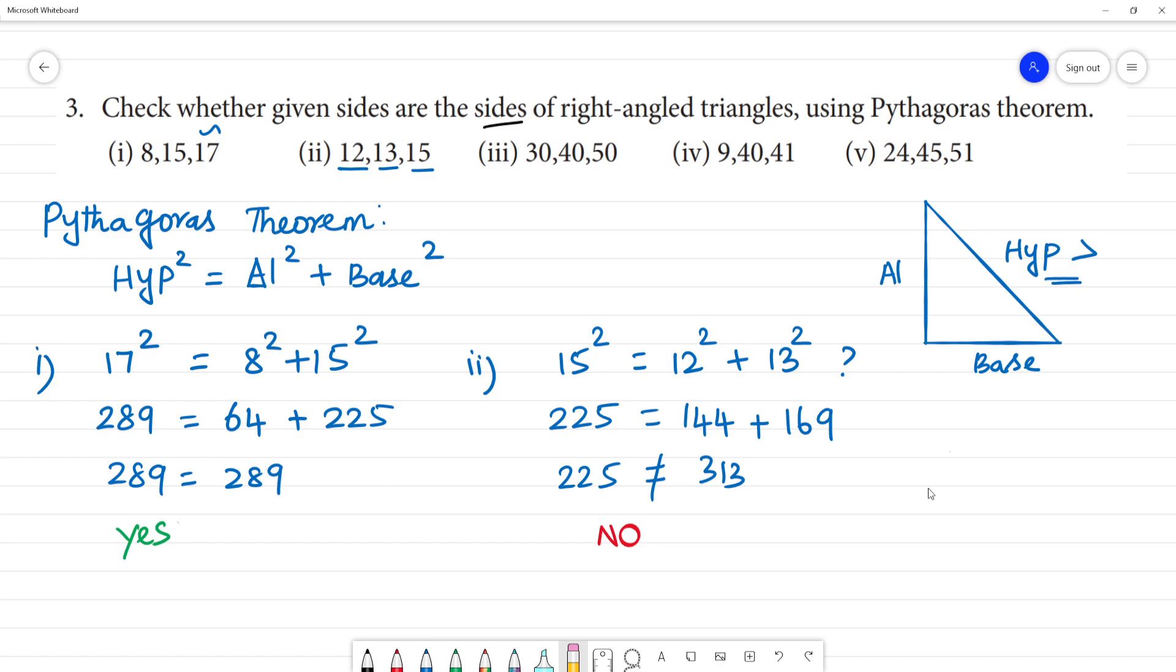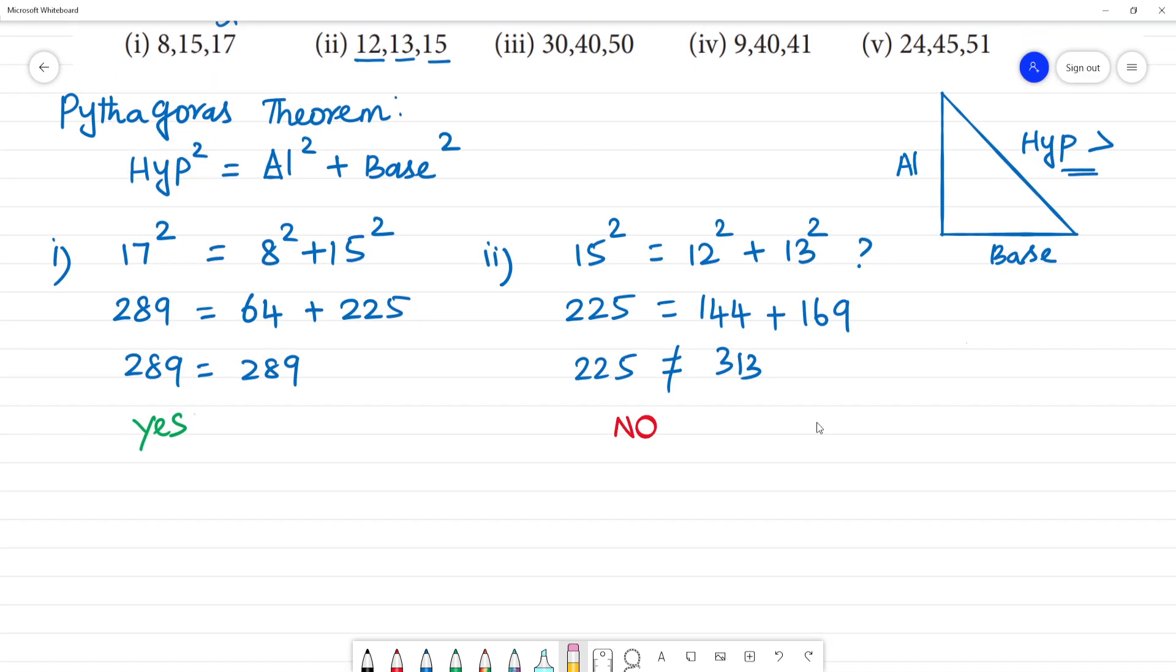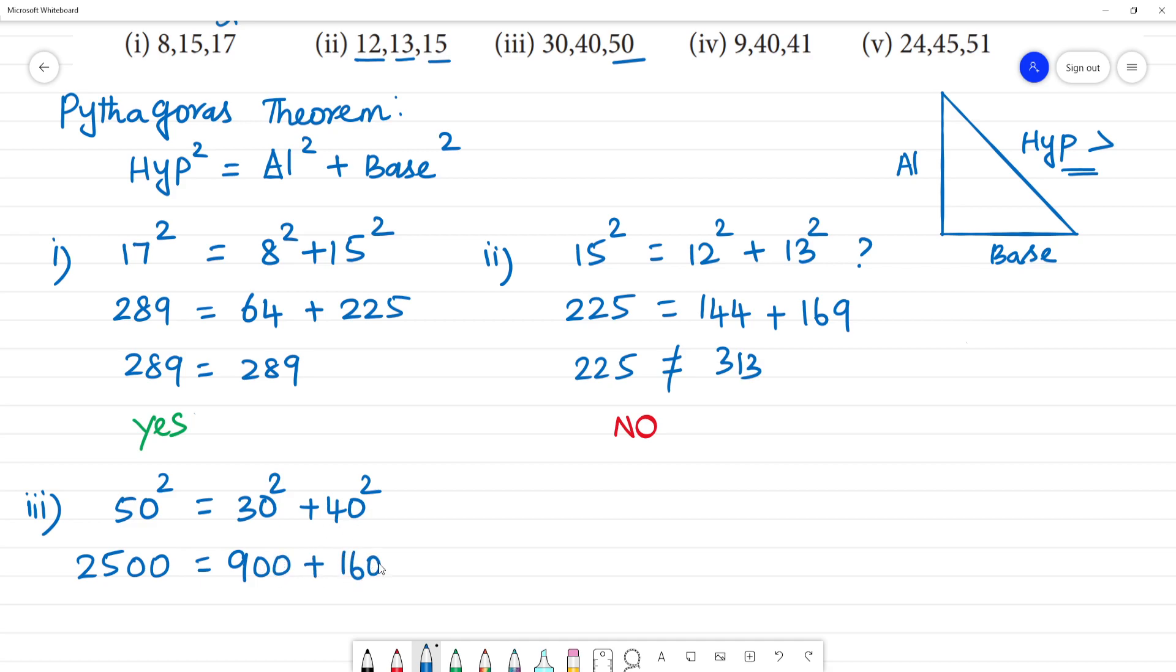Third one: 30, 40, 50. 50 will be the hypotenuse, so 50 square will be equal to 30 square plus 40 square. 50 square is 2500. 30 square is 900 plus 40 square is 1600, so what is 1600 plus 900? 2500.